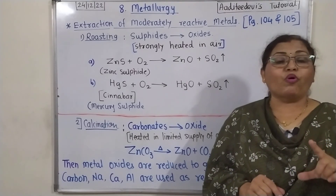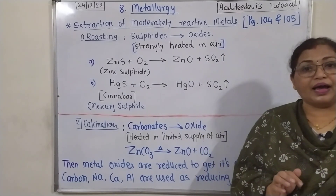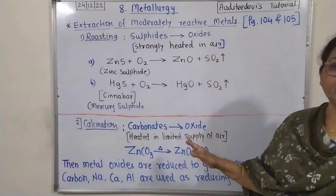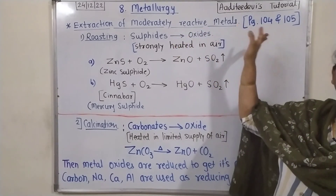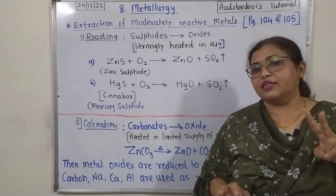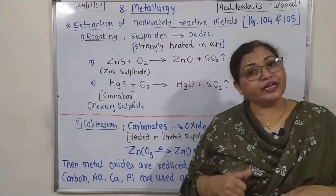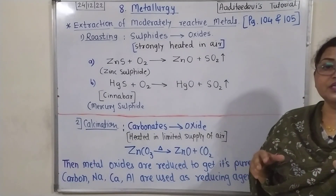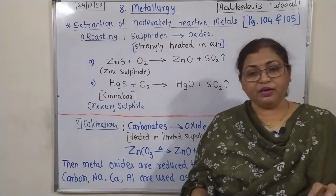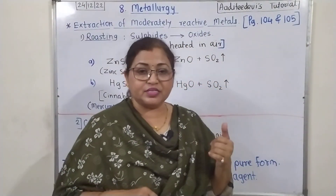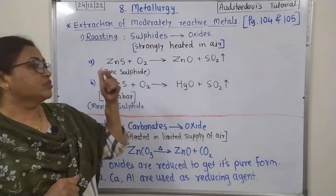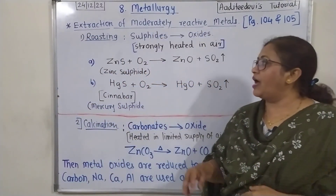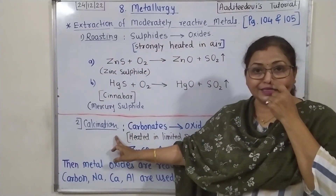The reactivity series — moderately reactive metals include zinc, copper, and iron. These metals are present in ores mostly in the form of compounds — sulfides or carbonates. These sulfides or carbonates are mostly extracted by two processes known as roasting and calcination.